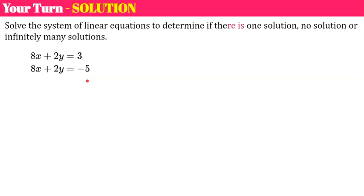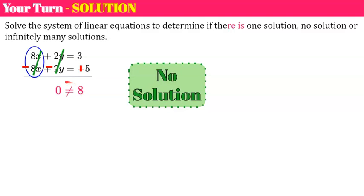Welcome back. This system is set up perfectly for elimination because the coefficients of x are the same. I subtract to eliminate: 8x minus 8x is 0, and 2y minus 2y is 0, leaving 0 on the left. Subtracting a negative value is the same as adding the opposite, so 3 plus 5 is 8. We all know 0 does not equal 8, so that's no solution. Both variable terms were eliminated and I had a false numerical statement, so there is no ordered pair that would be true for this — if graphed, the lines would be parallel.